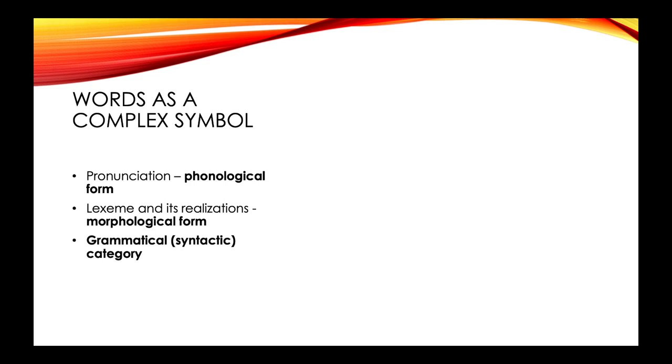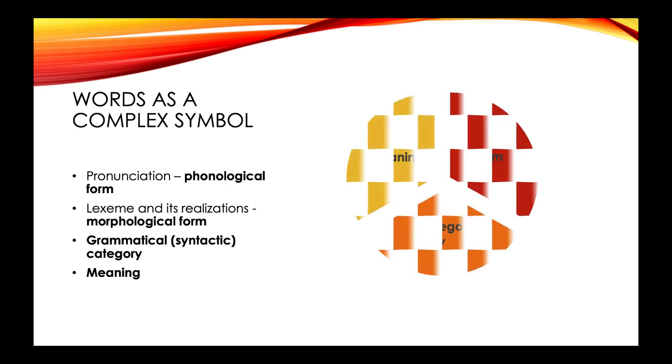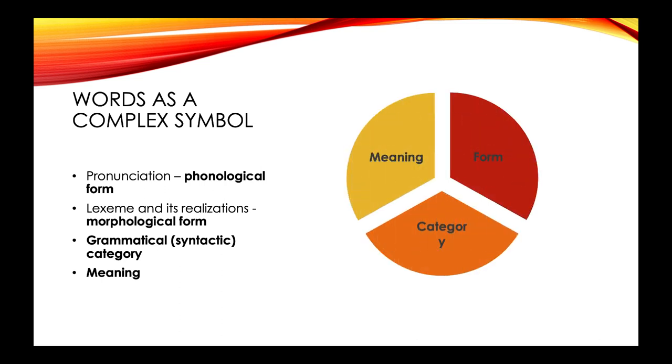We know whether the word is a noun, verb, adjective, adverb, preposition, and so on. That is, we know its grammatical category. And we know what the word means. Form, category, and meaning are the three components of our knowledge of each word in our lexicon.